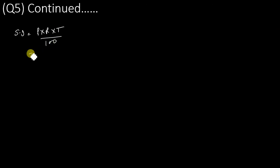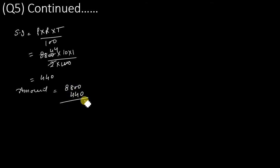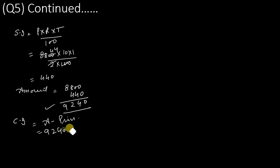For the remaining half year, we calculate simple interest: SI = P×R×T/100, where principal is 8,800, rate is 10, and time is 1/2. After cancellation this gives ₹440. So total amount for Ahmed = 8,800 + 440 = ₹9,240. Compound interest for Ahmed = 9,240 minus 8,000 = ₹1,240.